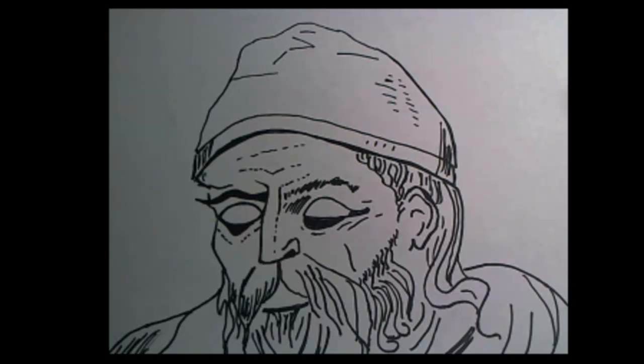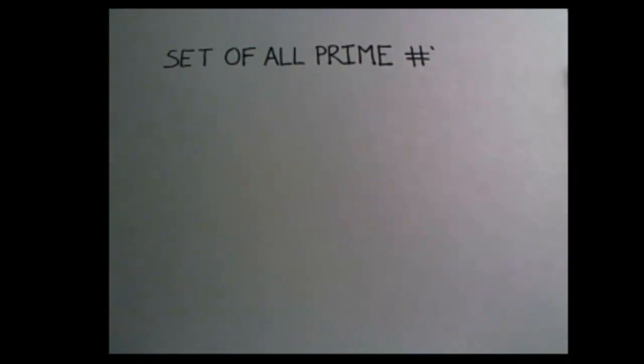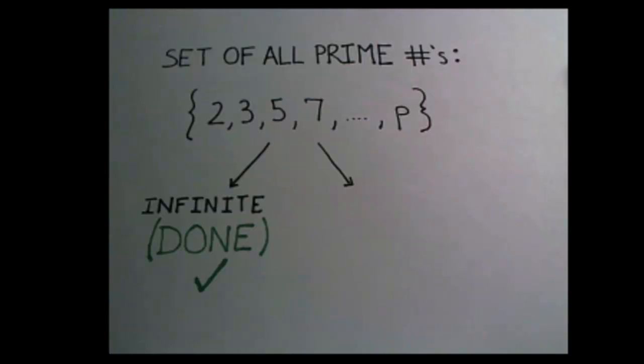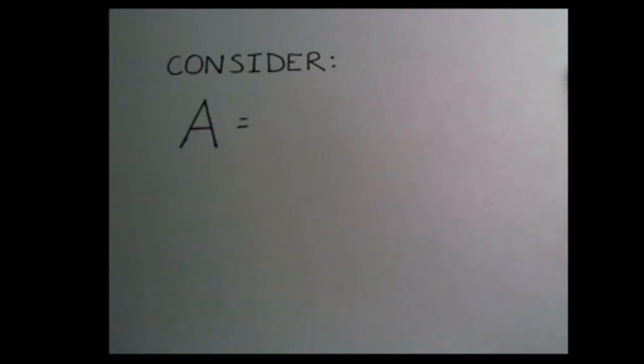So here's Euclid's proof that there are infinitely many prime numbers. Obviously, there's either a finite amount or an infinite amount. If there's an infinite amount, we're done. So assume that there are only a finite amount of prime numbers. Then consider this quantity. A equals the product of all the known primes plus one.